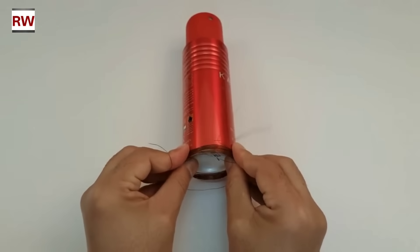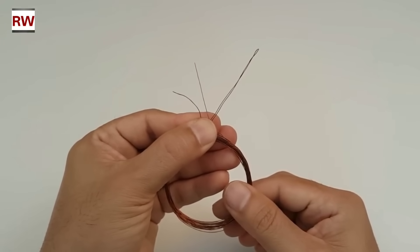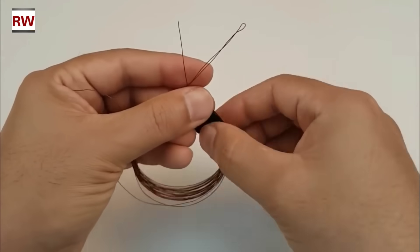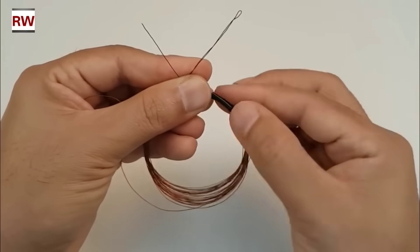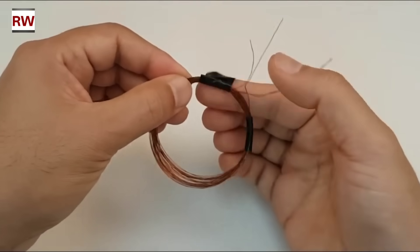After this step, our circuit starts to take shape and looks something like this. Here, we are using PVC tape, as you can clearly see. This tape helps secure the components tightly in place and ensures proper insulation as well. It's an essential part of the setup to keep everything stable and safe.